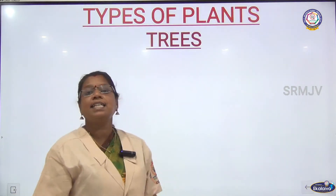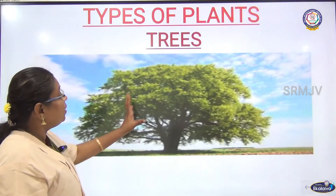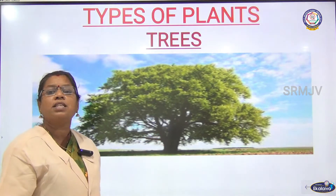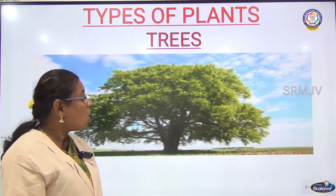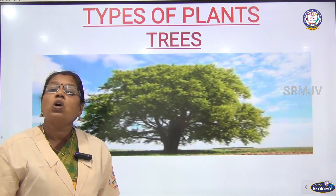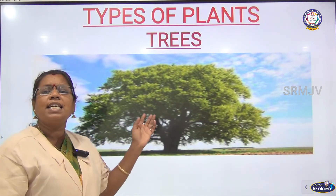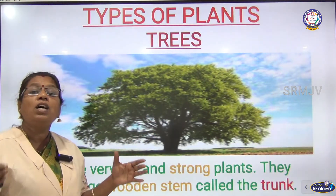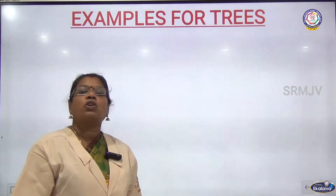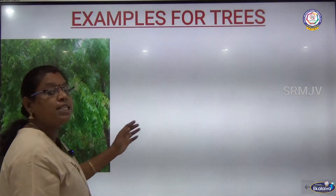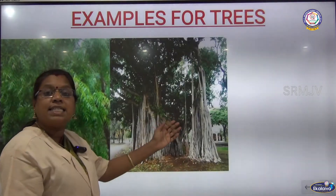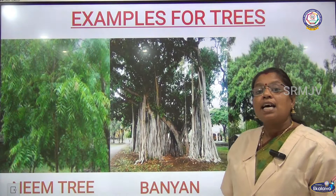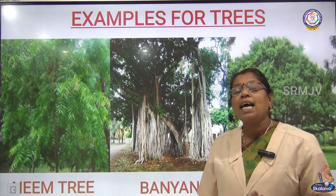First are the trees. Trees are very huge and have a strong woody stem called the trunk. Trees are big and strong plants. Examples of trees include neem tree, banyan tree, peepal tree, apple tree and mango tree.